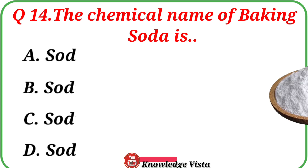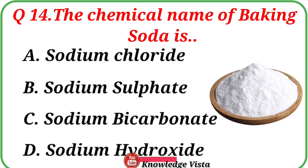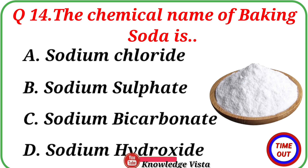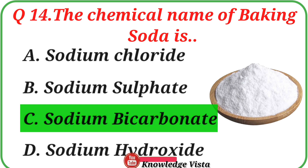Question number fourteen: The chemical name of baking soda is? Option A: Sodium chloride, B: Sodium sulphate, C: Sodium bicarbonate, D: Sodium hydroxide. Correct answer is option C: Sodium bicarbonate.